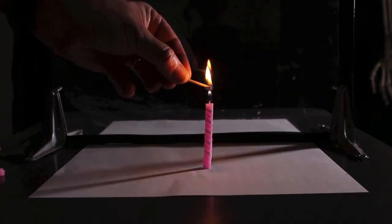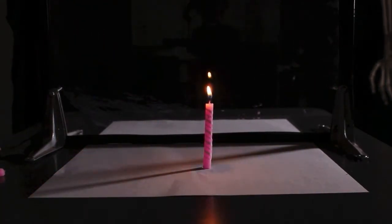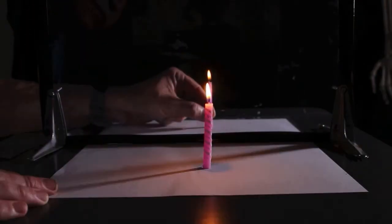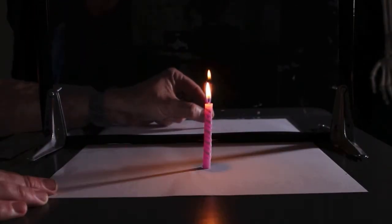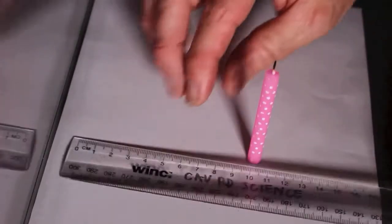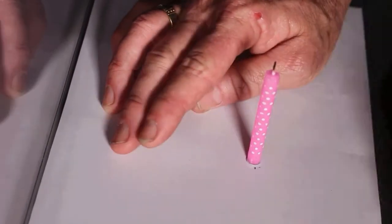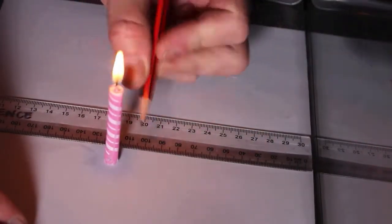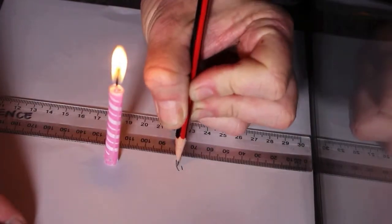This experiment is called Image Finder. There is a lit candle on one side of the glass and on the other side of the glass there's an unlit candle which is moved around until it looks like the flame is coming from the unlit candle. Then the distance away from the glass is measured on both sides and we find the distance is equal. So therefore the image is the same distance behind the glass as the object is in front.